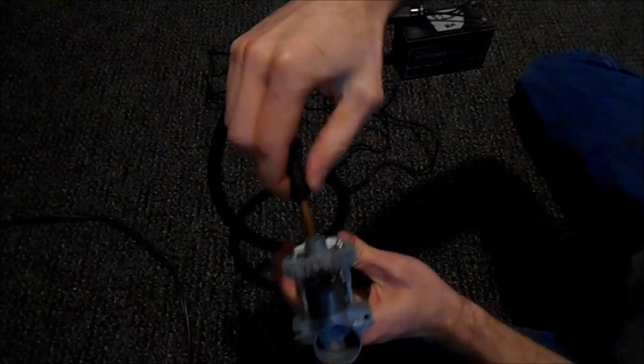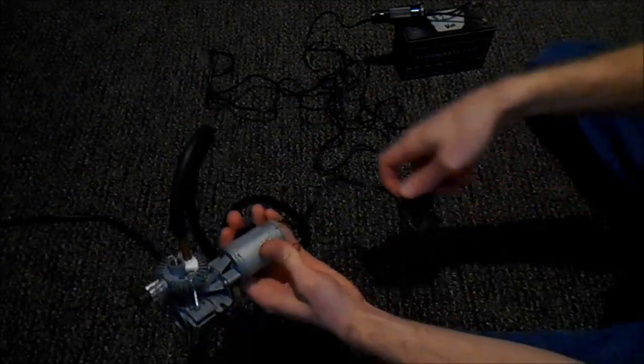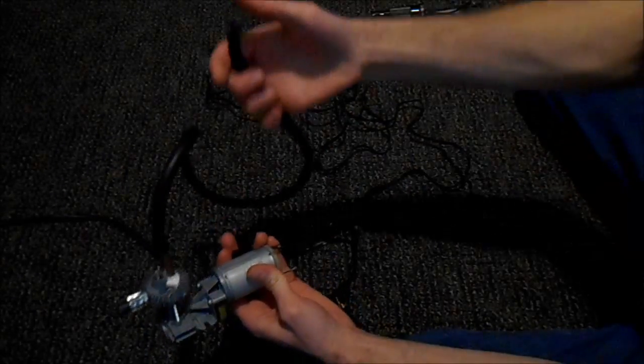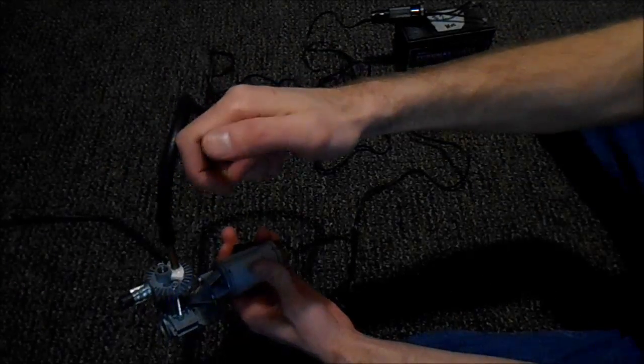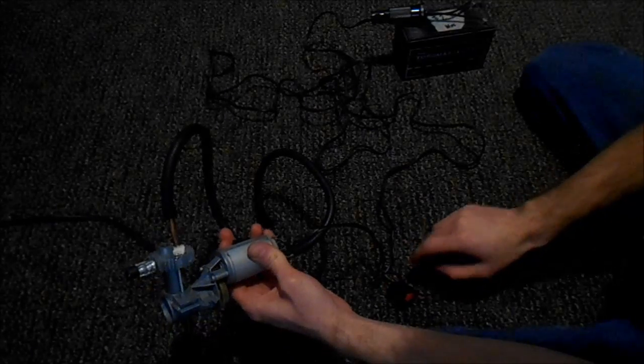So once the epoxy hardens, you can force the rubber pipe onto there over the tube. Turn it on. You can see that - put your thumb over it and see that it is working as a vacuum pump.